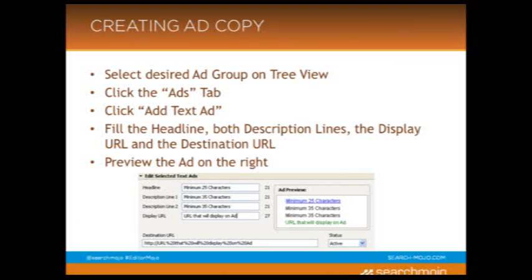The next thing to do would be to create ad copy. You're going to select the desired ad group on the tree view — the ad group you want to add ad copy to. Then you click the ads tab, click ad text ads, and then you're going to fill in the headline, the description line, the display URL, and the destination URL. As you can see in the image, you fill it in those boxes. Just remember that the headline can only contain 25 characters, each description line can only contain 35 characters, and the display URL and the destination URL have to have the same domain. To the right of where you insert your text, you can see a preview of the ad, which will actually show you what the ad is going to look like on the search network.